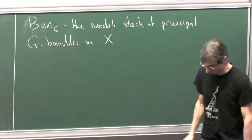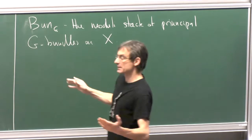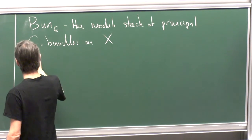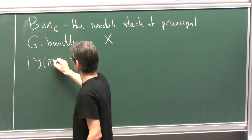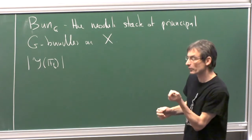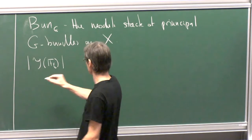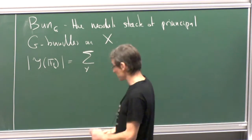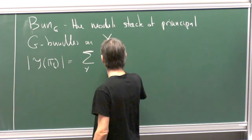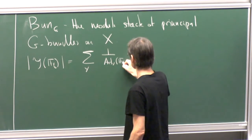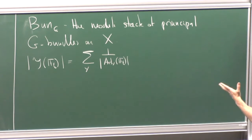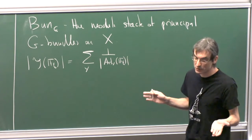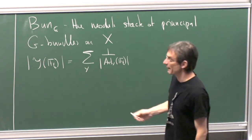This is an algebraic stack over the field, but it's not quasi-compact. Yet, if you have a quasi-compact stack Y over a finite field, you can calculate the number of its points — but points must be taken with multiplicities. By definition, this is the sum over isomorphism classes of points, where for each class you assign the weight 1 over the number of elements of its automorphism group. This is a finite sum if your stack is quasi-compact.